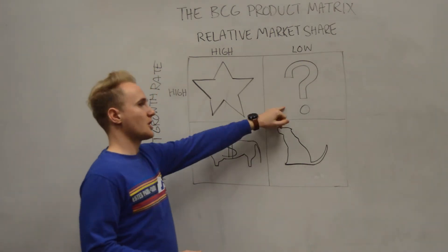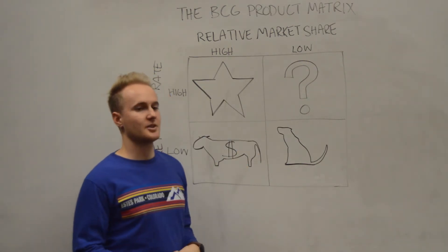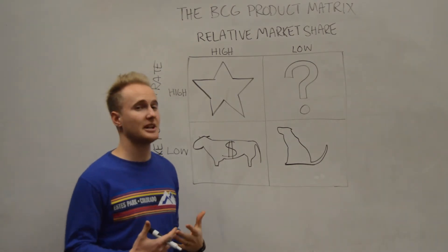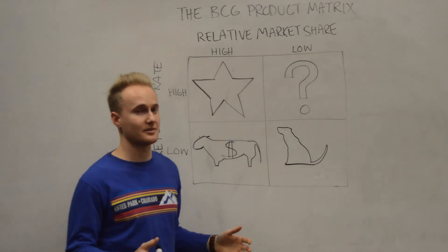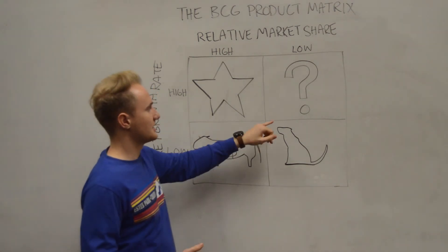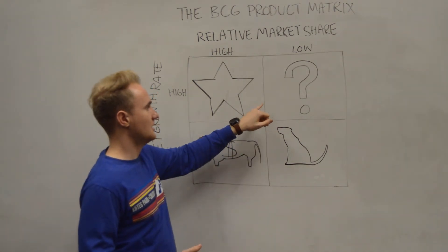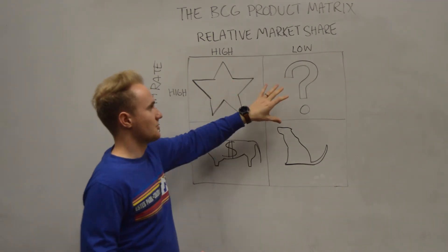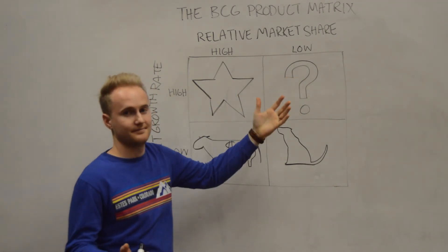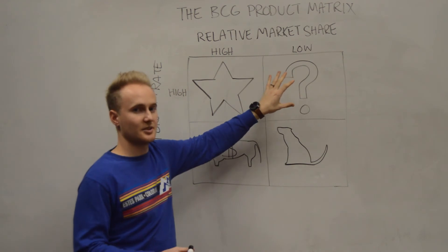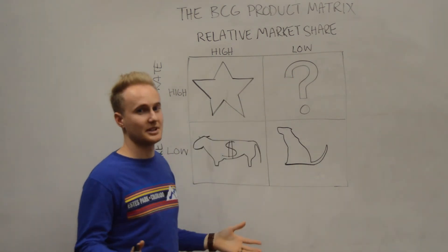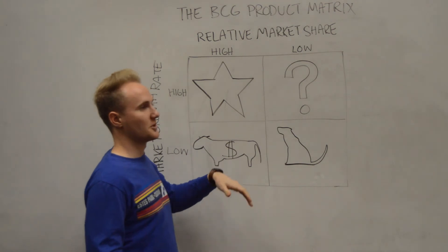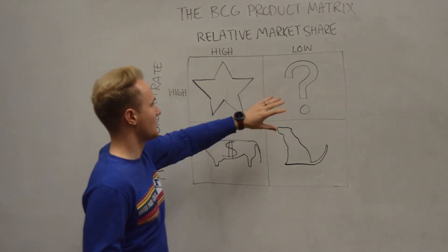In the question mark products, if you think about Rovio — they made the game Angry Birds. They also made a lot of other games that you've never heard of, and it took them a long time to get successful with Angry Birds, which we would place here in the Star Zone. But all their other products just kind of failed. They didn't really work out, but we didn't know if they would or wouldn't. Angry Birds did; the other ones didn't. So all the other products end up in the question mark zone.